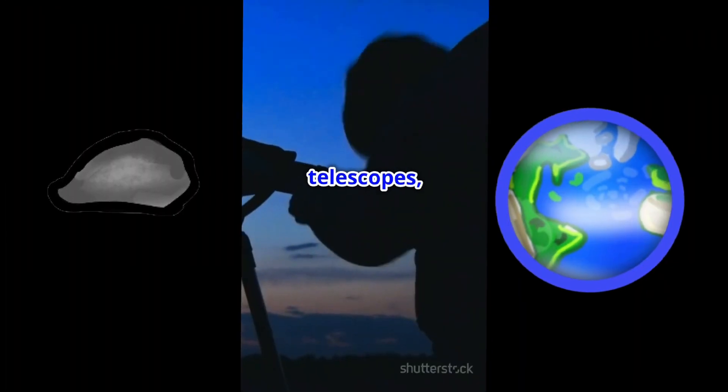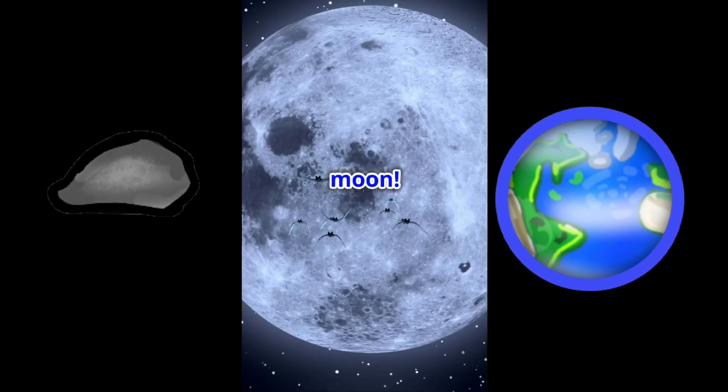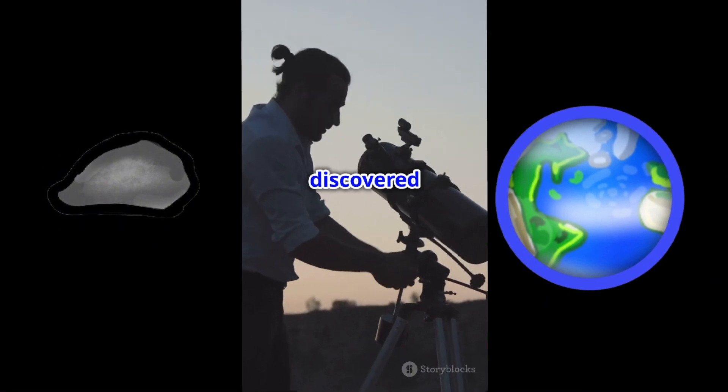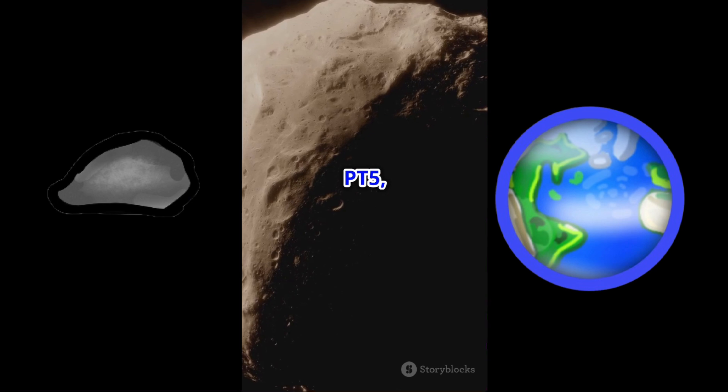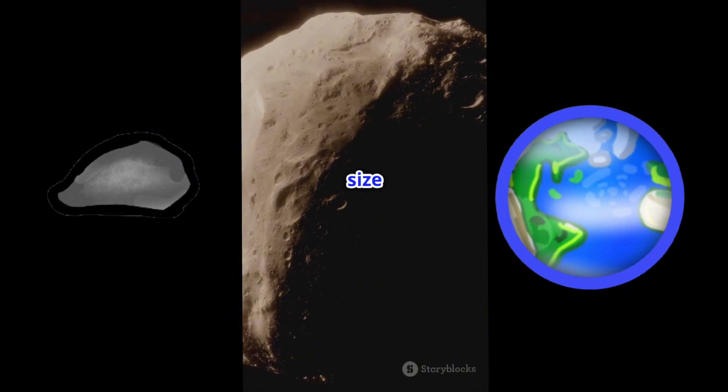Hold on to your telescopes, space fans. Earth has a new moon. In 2024, astronomers discovered a brand new moon orbiting Earth. Named 2024 PT-5, this cosmic rock is about the size of a bus.